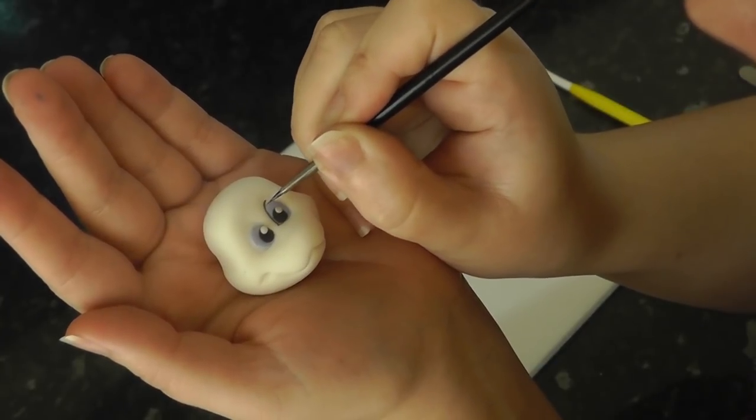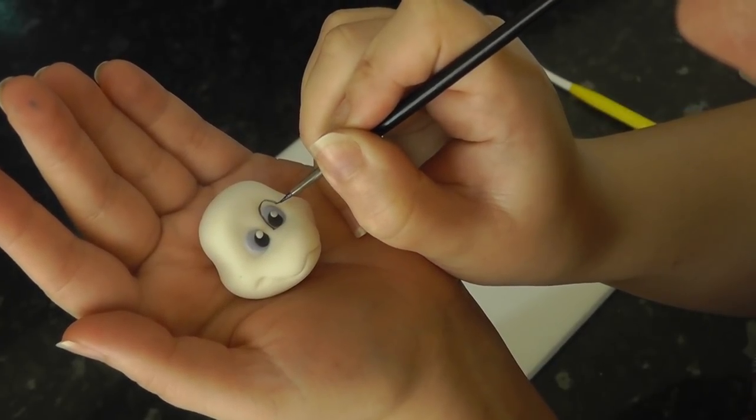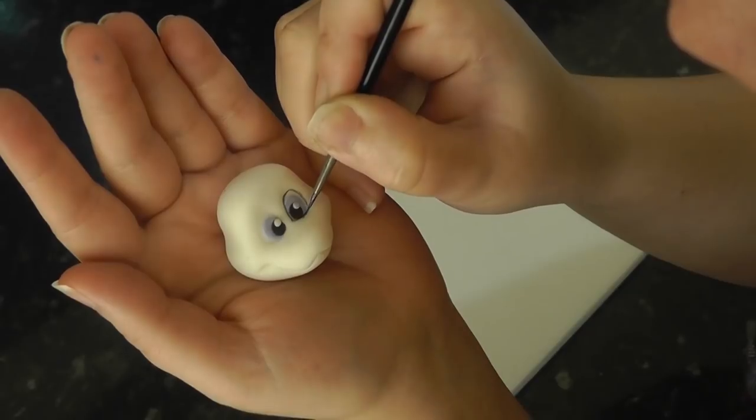Now the black paint. Mark around the whites of the eyes to make them stand out and add little flicks for eyelashes.